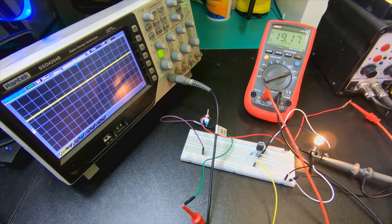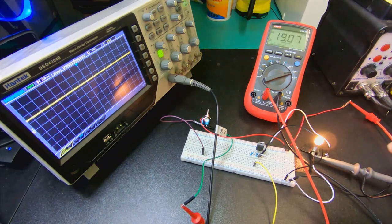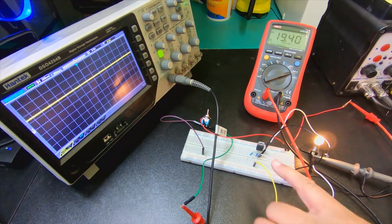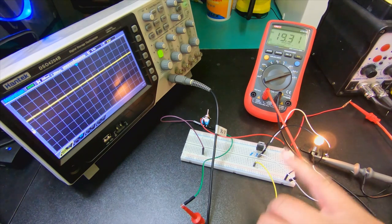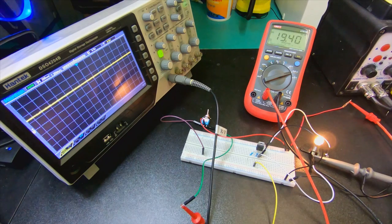So this is kind of the way you do the design. You should look at what is going to be the load current. And then you look up the minimum beta for the transistor. And then you use that to define a base current. And then you, based on the supply voltage, you calculate a base resistor. And then you test it out.